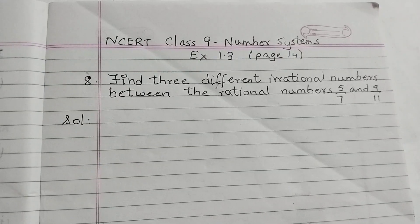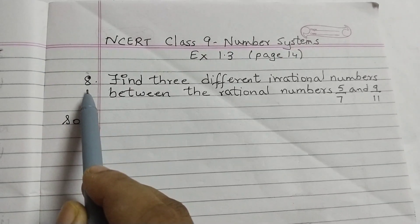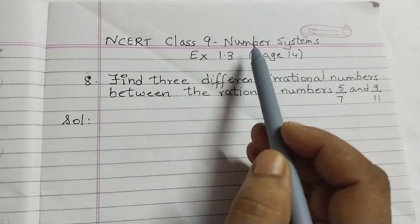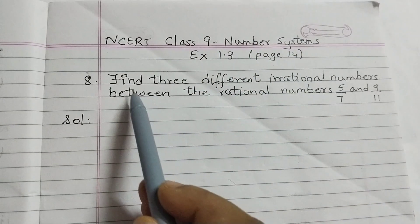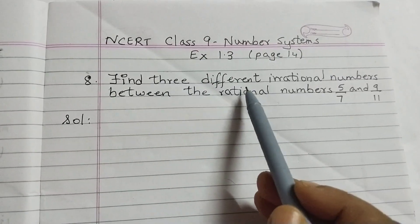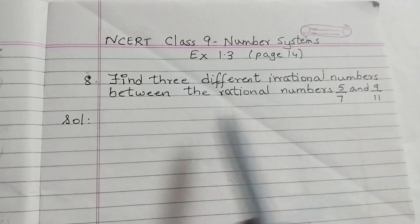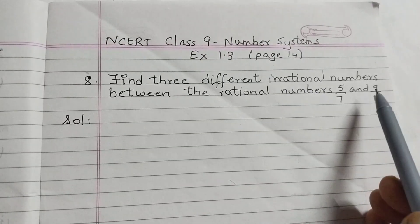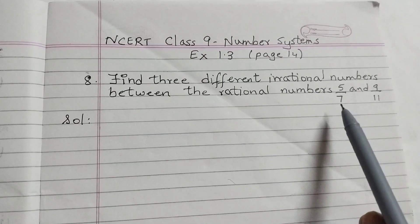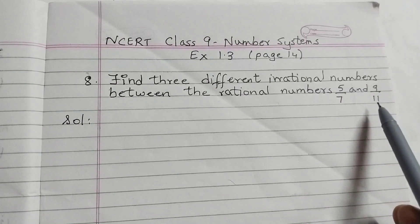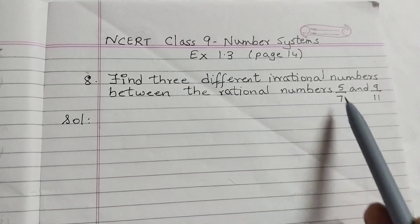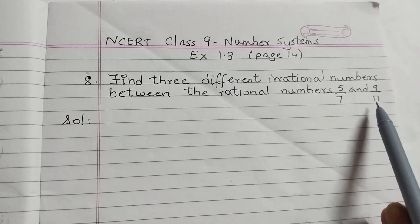Hello students, in this video we shall discuss question number 8 of exercise 1.3, that's chapter 1 number systems. Find 3 different irrational numbers between the rational numbers 5 by 7 and 9 by 11. 5 by 7 and 9 by 11 are rational numbers. We need to find 3 different irrational numbers between these 2 rational numbers.